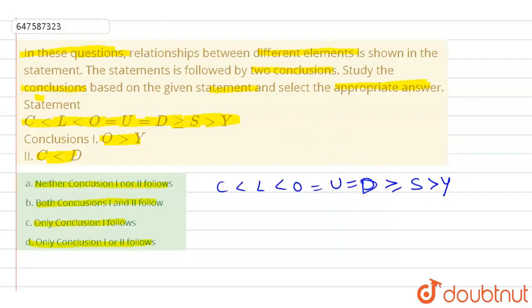And now we have to see that we have a conclusion. Conclusion one is O greater than Y. So now we have to see that O is greater than Y.